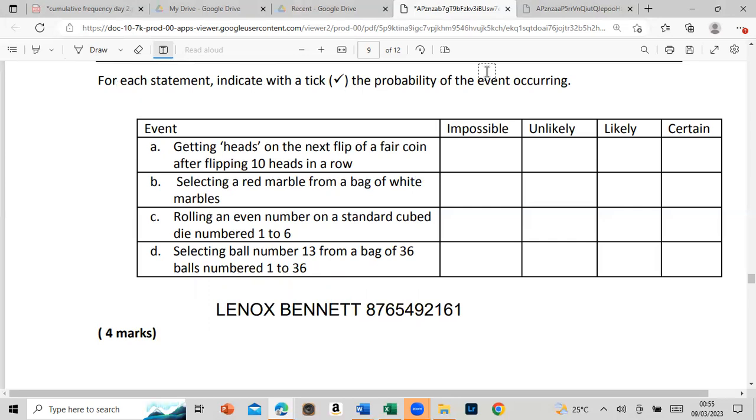All right, let's look at this. For each statement, indicate with a tick the probability of the event occurring. Probability is exactly that - is it possible to happen? It's the likelihood of something happening. Let us read it carefully and we're gonna tick one of these: whether impossible, unlikely, likely, or certain. So what I want you guys to do - if you think the answer for A is impossible, just type A impossible, or if you think it's unlikely, just type A unlikely.